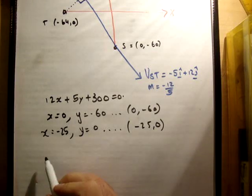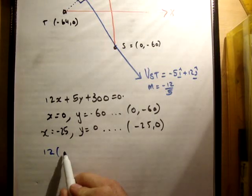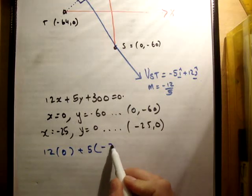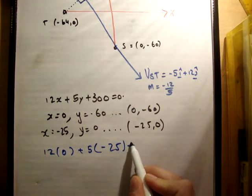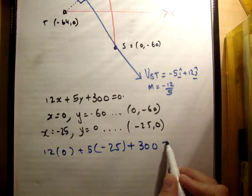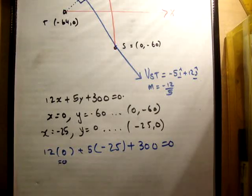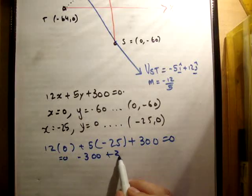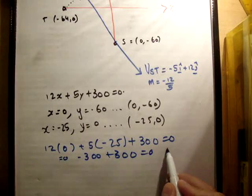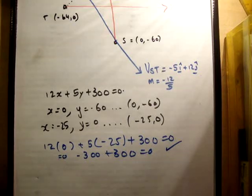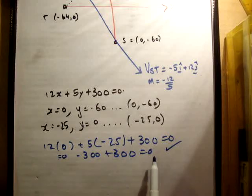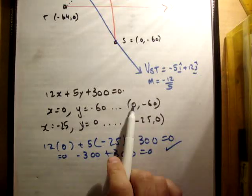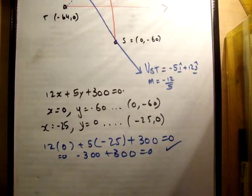So we get 12 times 0 plus 5 times (-25) plus 300 = 0. Now, this is 0. 5 times -25 is -300 plus 300 equals 0. And you get that. That's correct. So you know that a point is on this line if you put it into the equation and you get 0.